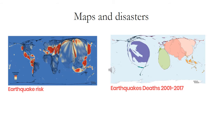And quite shocking, these two maps: the first showing earthquake risk, which is quite high in many countries of the world, either developed or developing ones. And on the right, you see earthquake deaths. And you see how much inequality there is.